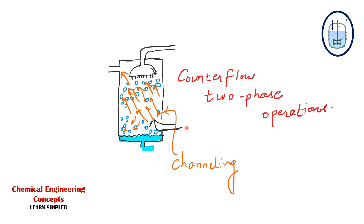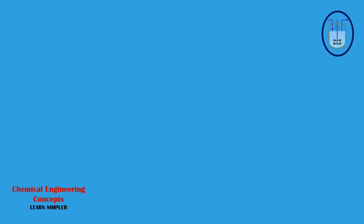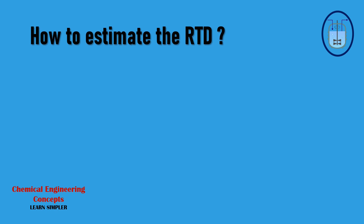Another example of non-ideality is seen in a counter-flow two-phase operation. You can observe channeling where air bubbles pass through the liquid without complete contact or phase transfer between phases, exiting the column without fully reacting. This type of non-ideality can occur inside various process equipment.